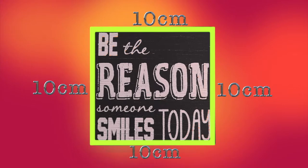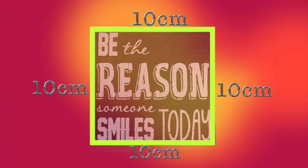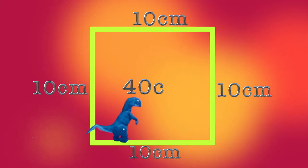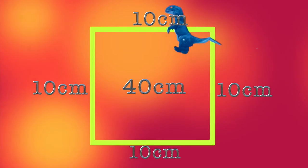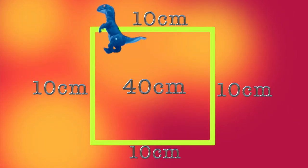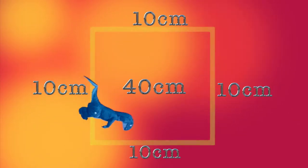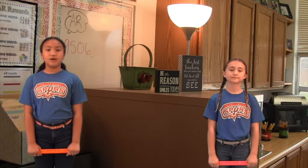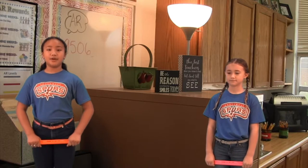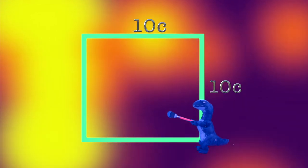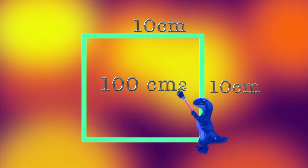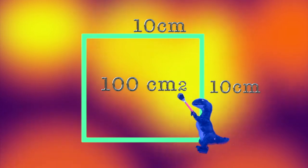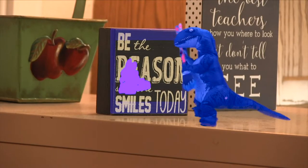Or we could take a shortcut and multiply the length of one side times 4 — 10 times 4 is 40. That works too! I like when there's more than one way to solve a problem. So the perimeter of the square is 40 centimeters. Go ahead, Shape-a-saurus, show us the perimeter! Now to find the area, we multiply the length and the width: 10 times 10. That's one of our basic math facts — 10 times 10 is 100. So the area of the square is 100 square centimeters.